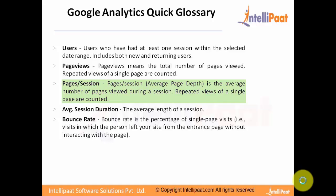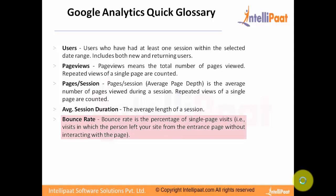Pages per session — that is the average page depth — is the average number of pages viewed during a session. Repeated views of a single page are counted. Average session duration is the average length of a session. Bounce rate is the percentage of single-page visits, i.e., visits in which the person left your site from the entrance page without interacting with the page.